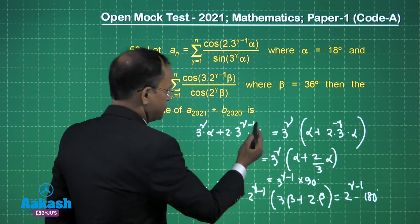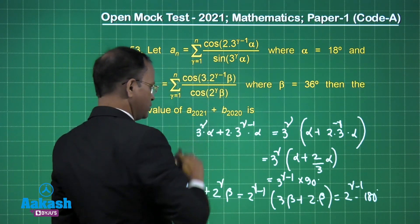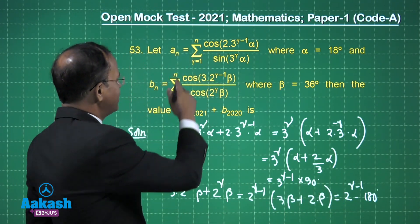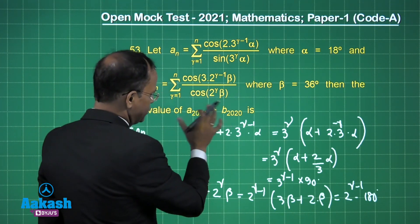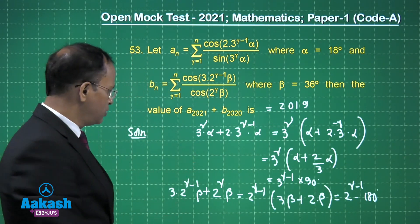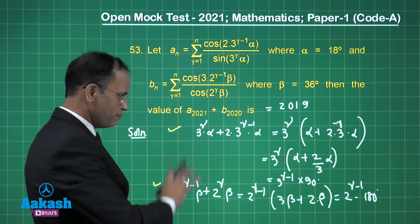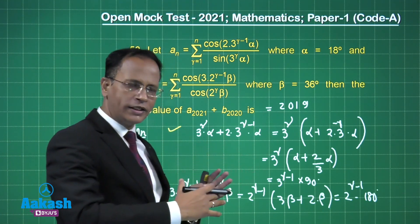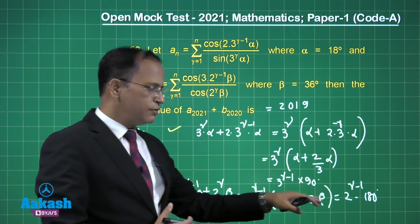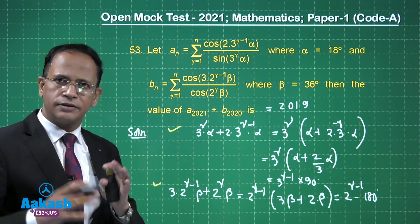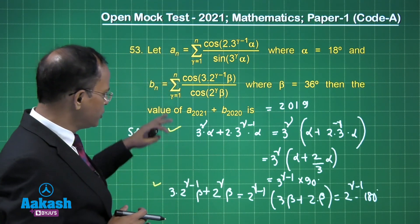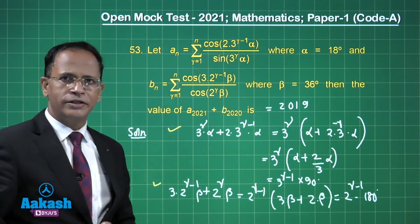Once we get the allied angle forms — cos(90°−θ) = sin θ and cos(180°−θ) = −cos θ — we substitute the values, simplify, and get one telescoping relation. Substituting and summing, the final answer is 2019. That is the key technique: recognizing the multiples of 90° and 180° and using allied angle identities.